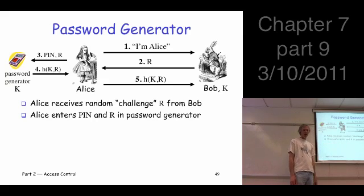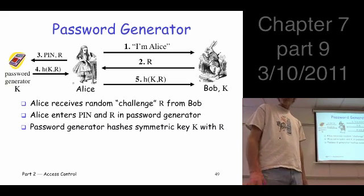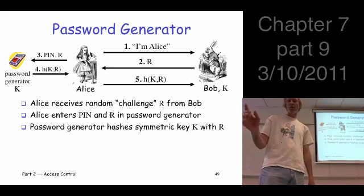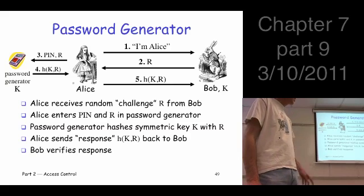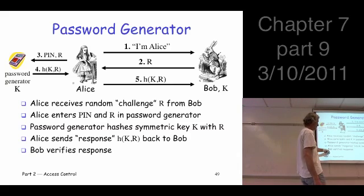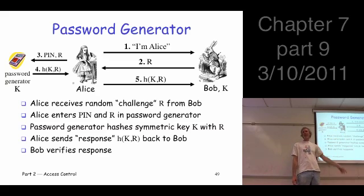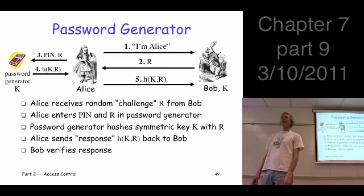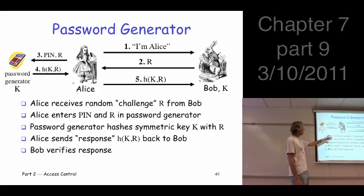Alice enters the PIN and she enters R into the password generator, and then it hashes those two to produce the correct value that she can send back to Bob. An important point is that Bob knows enough that he can verify the response. How about Trudy — can Trudy pretend to be Alice here? She doesn't have the password generator, so she can't do this.